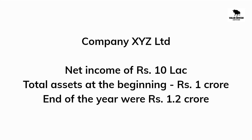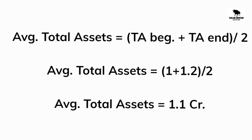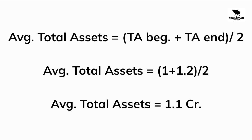Let us understand how to calculate return on assets with a simple example. Consider a company called XYZ Limited that reported a net income of 10 lakh rupees for the financial year ending on March 31, 2022. The company's total assets at the beginning of the year were 1 crore and at the end of the year were 1.2 crore. First we need to find the average total assets: 1 crore plus 1.2 crore divided by 2, which equals 1.1 crore.